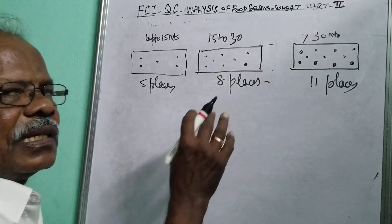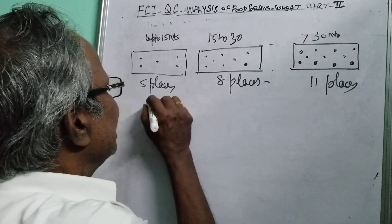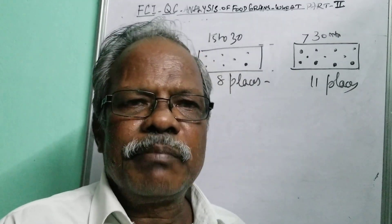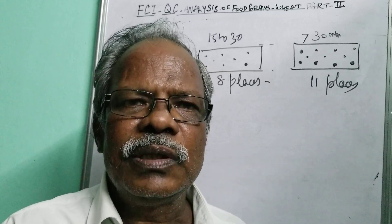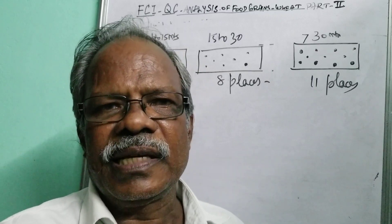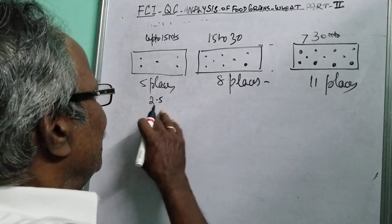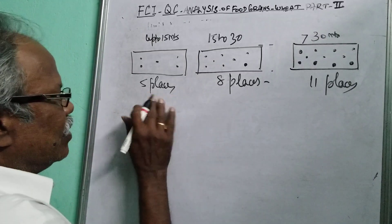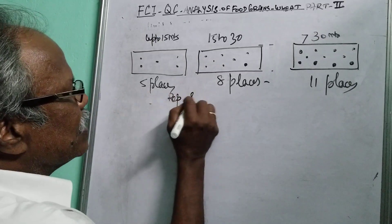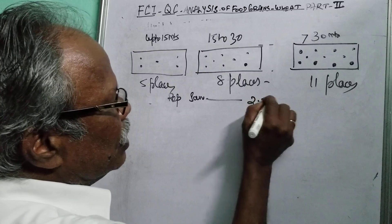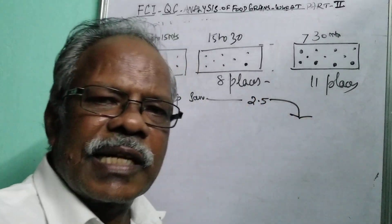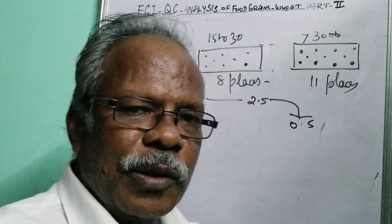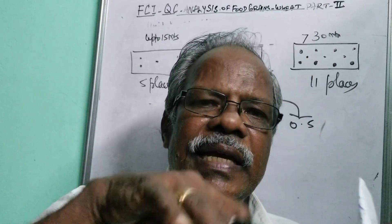At least 2.5 kg must be taken as the minimum representative sample. More than 2.5 kg can also be taken, but finally we have to reduce it to 0.5 kg. This reduction is done by putting the wheat into a sample divider.